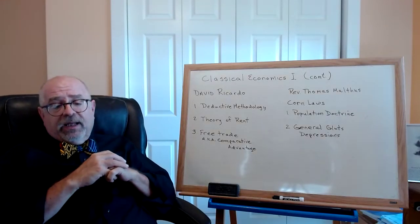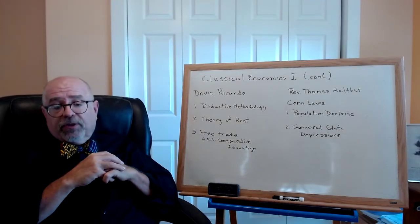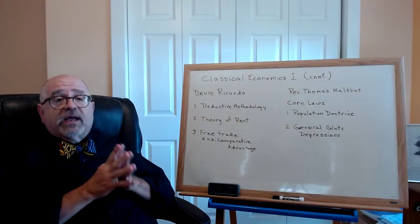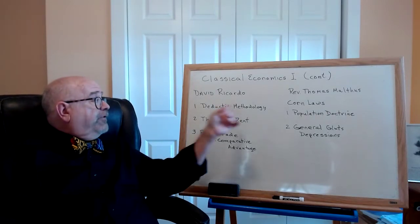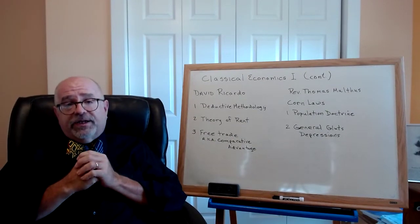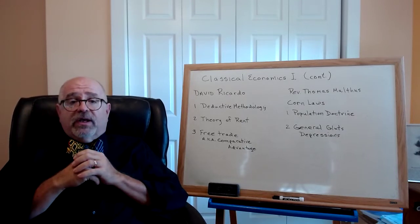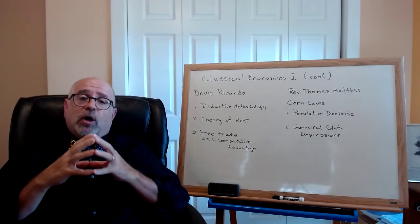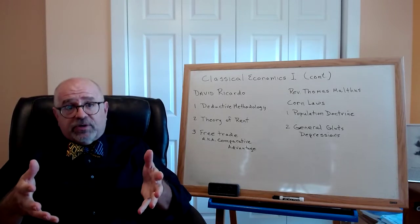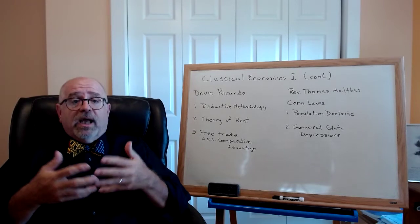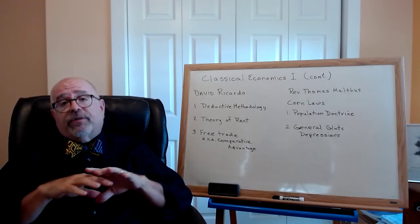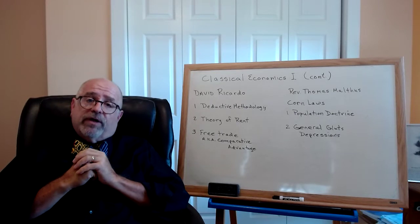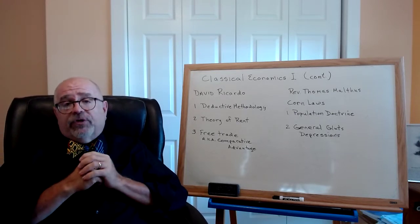In 1817, David Ricardo writes a book called The Principles of Political Economy and Taxation. In this, he makes three significant contributions to classical economics. The first is his emphasis on deductive logical analysis. He was not interested in the empirical reality around him. He was trying to develop general theories by making assumptions, applying logic, and drawing conclusions that were true deductively, like a math problem. And in fact, this approach is what drove us to using mathematics to describe the economy.